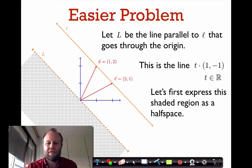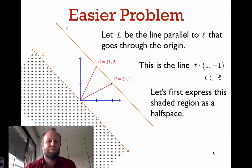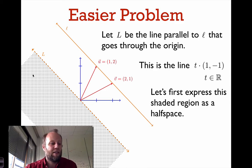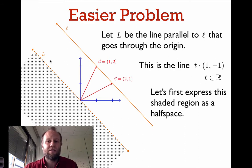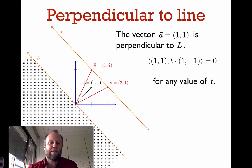Now that we know what the line is, let's start with an easier problem. Let's look at the line capital L, which is parallel to little l and goes through the origin. We'll first try to express the region to the southwest of capital L as a half space. The line capital L is the set of points given by t times (1, -1).